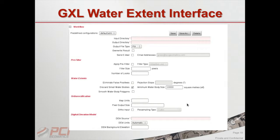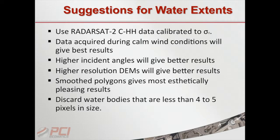Some very basic suggestions if you want to run this: use RADARSAT-2 CHH data calibrated to sigma naught — it has to be calibrated to sigma naught because the model is based on that. If you can, try to acquire the data when the wind is fairly calm, though that's not always possible. Higher incidence angles give you better results, as do higher-resolution DEMs. As a general rule, discard water bodies that are less than four or five pixels in size because of speckle.